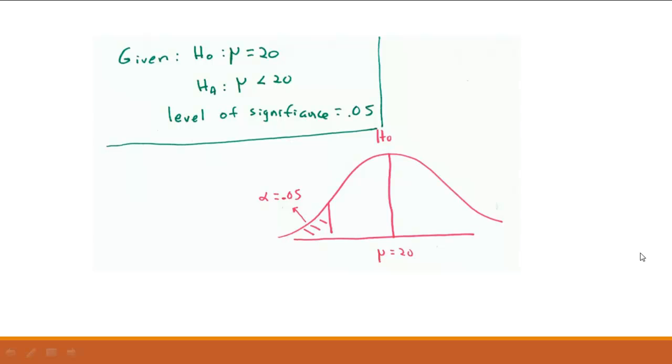Okay, let's consider a situation where you're given that the null hypothesis is that the mean is 20, the alternative that it's less than 20, and that you have a level of significance of .05.